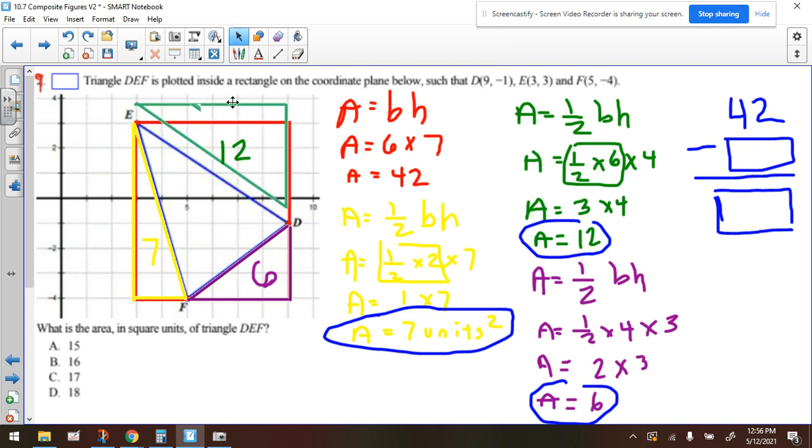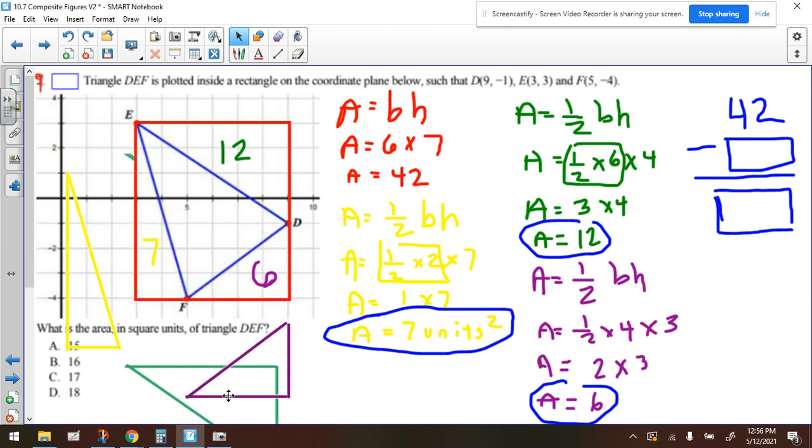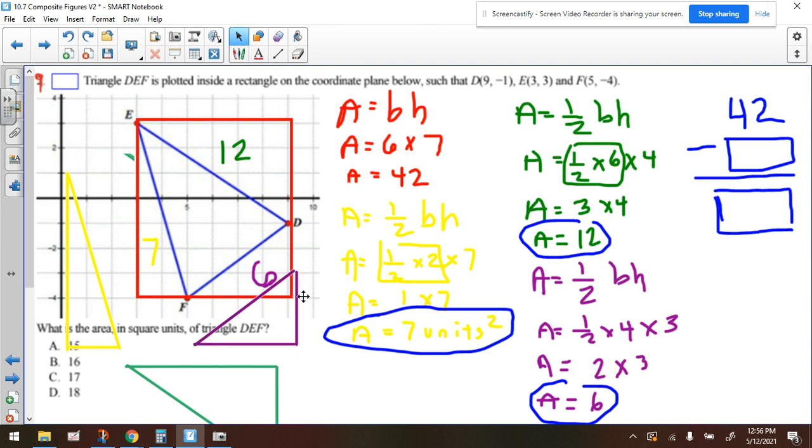So if you're not sure where the 42 came from, let's move all these things out of the way. So you can see, that's this red rectangle right here. We found the area of that, and it's 42. The triangle is inside it. We're subtracting out the purple, the green, and the yellow triangle from it, because it's not part of this blue triangle. We want to know the area of what's inside.